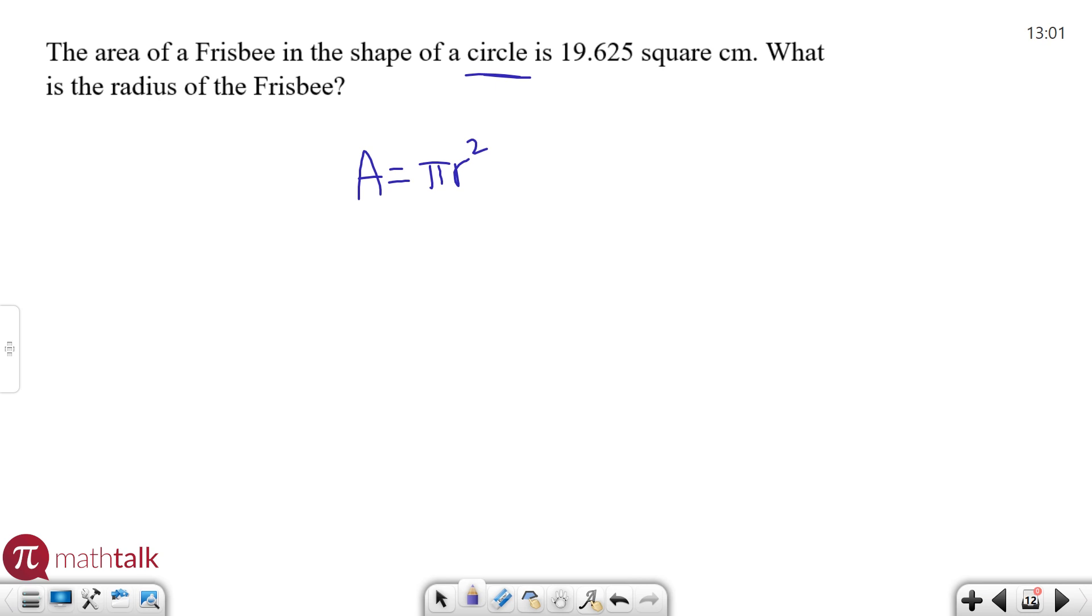Usually when you see problems like this, they'll tell you to use 3.14 for pi. Let's fill in the numbers that we know and solve for the ones we don't know. 19.625 is the area. That's equal to 3.14 times r squared. We need to figure out what r is, the radius. We're going to divide both sides by pi. When you do that, 19.625 divided by pi, you get 6.25, which is r squared.